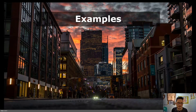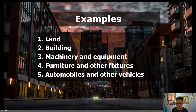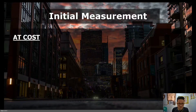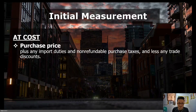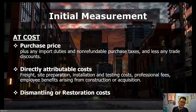Next, the following are recognizable items of property, plant, and equipment. These are the common items, but of course not limited to the list. Initial measurement: property, plant, and equipment is measured at cost. Cost includes purchase price, directly attributable costs, and dismantling or restoration costs. Regarding purchase price, it includes import duties and non-refundable purchase taxes but will not include trade discounts. Directly attributable costs are costs that are necessary in bringing the asset to its working condition and location.